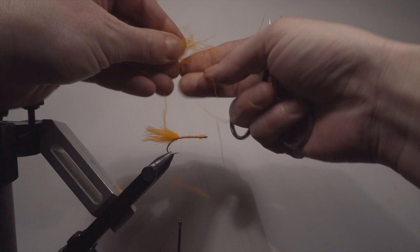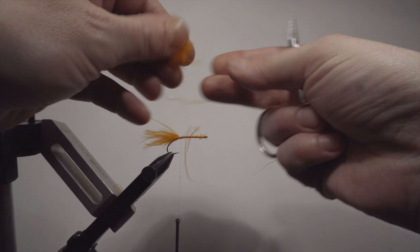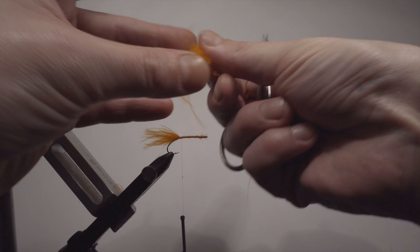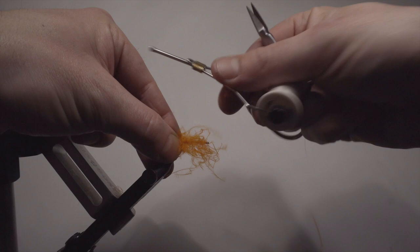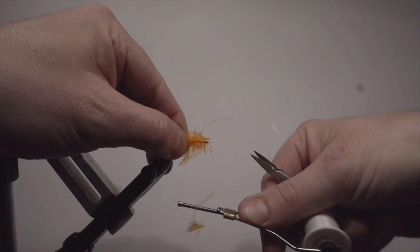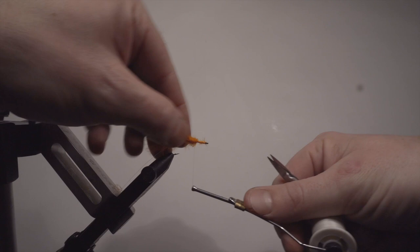Then you just take the marabou in your hand like this and make it more dubbing friendly. Like this. Then I'm just putting that like so, and I'm starting to wrap my thread. Going back and forth a little bit, making this material spin around.